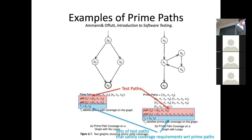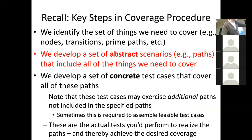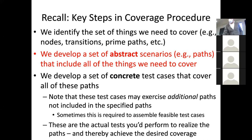Another possibility: you could have one path that goes straight through, and another that goes N0, N1, N3, N4, N1, N3, N4, N1, N2. You might say — wait, that has repetition, is that a valid start-to-finish path? That's not the point. At this stage of our work, we're not trying to deal with prime paths or simple paths anymore. We're just trying to find paths from start to finish. They could have any number of repetitions — we just want to cover the prime paths we identified.